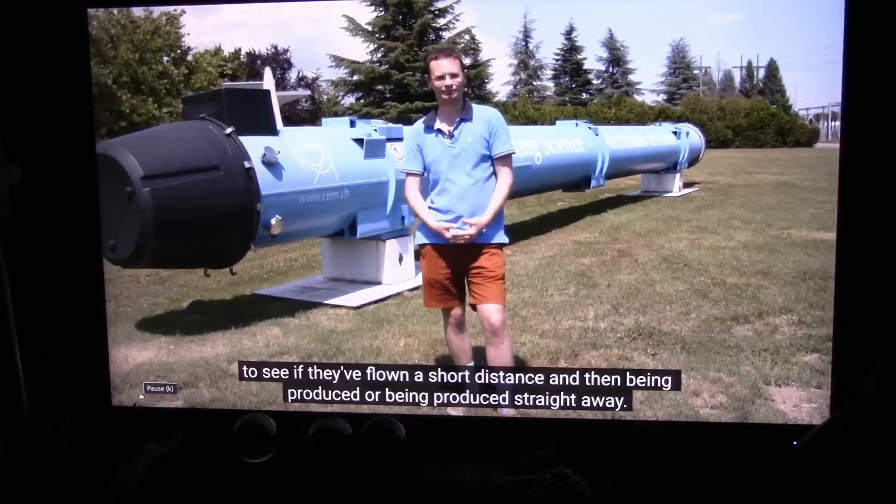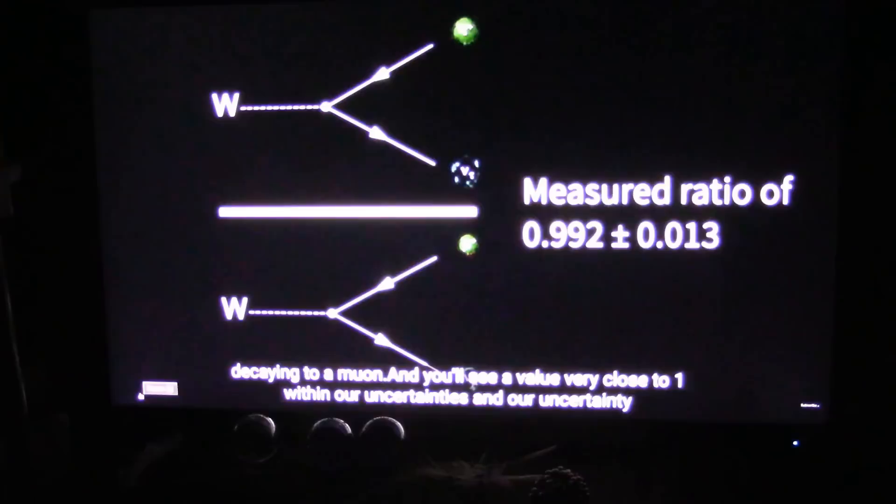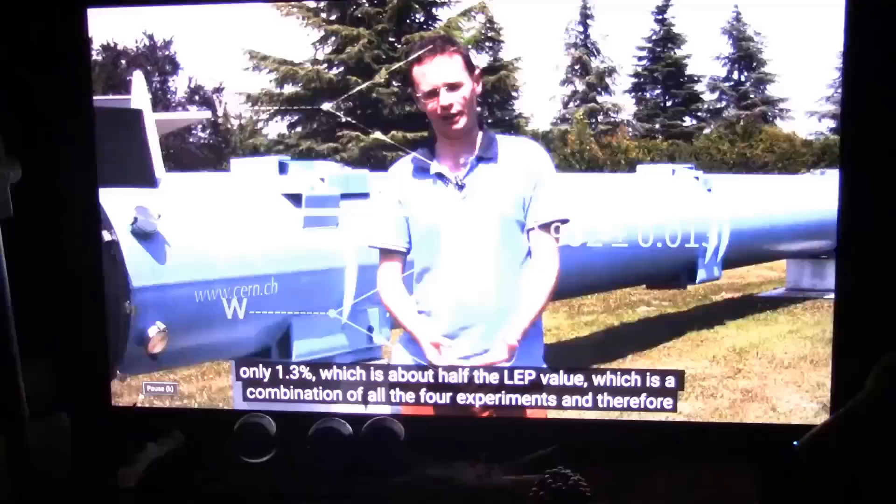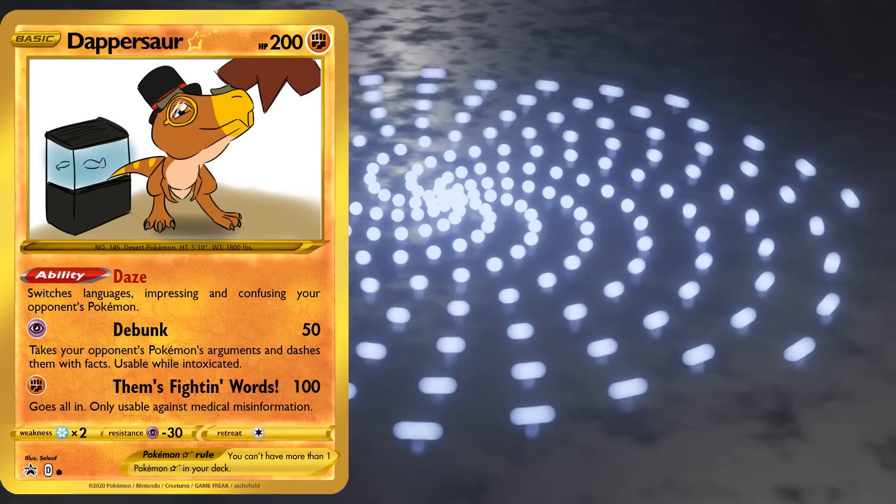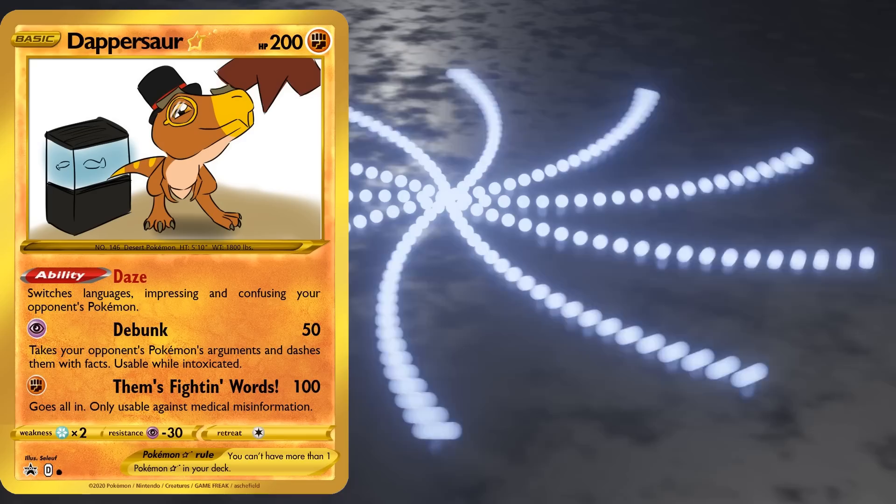So our measurement is of this ratio of the probabilities of a W decaying to a tau divided by the probability of the W decaying to a muon and we see a value very close to one within our uncertainties and our uncertainty is only 1.3% which is about half the lept value which is a combination of all the four experiments and therefore the standard model survives the stringent test of lepton universality.